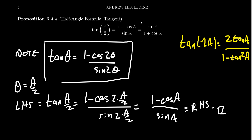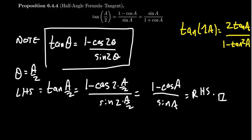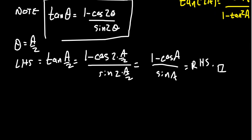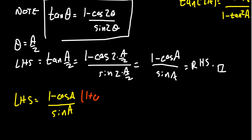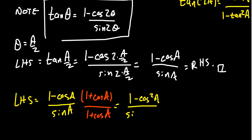How do we get the other version? It turns out you want to use conjugation. Start with one minus cosine of a over sine of a — the first version of the half-angle identity for tangent. Multiply the top and bottom by the conjugate: one plus cosine of a over one plus cosine of a. Notice one plus cosine of a is the new denominator we're looking for. Foil out the numerator: you get a one, then minus cosine and plus cosine cancel out, leaving a negative cosine squared of a, all over sine of a times one plus cosine of a. By the Pythagorean identity, one minus cosine squared equals sine squared — that's why we use conjugates in trigonometry all the time.